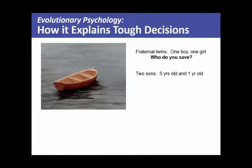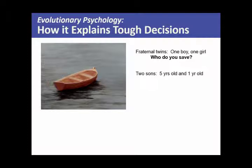You're back out in the boat with your two sons — one is five and one is one. The boat overturns again. You can swim, neither of your sons can swim, and one of them is going to die. Who are you going to save?